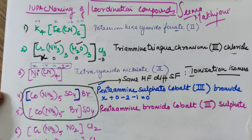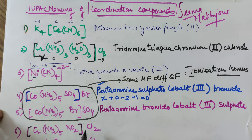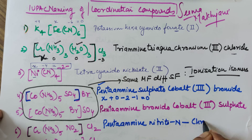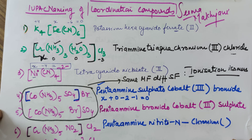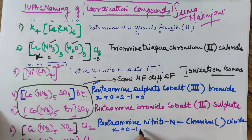Moving to example six: chromium remains chromium in the square bracket. There are five amines, and nitrito with N — because the nitrite is bonded via nitrogen — so it is nitrito-N. Chloride is outside and is not the ligand, so it remains chloride. The name is pentaamine nitrito-N chromium(III) chloride. For the oxidation number: amine is 0, nitrite is minus 1, two chlorides are minus 2 total; x comes out to be 3.